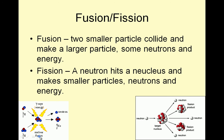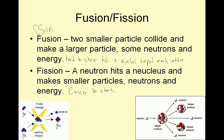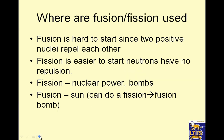Fusion: two smaller particles collide and make a larger particle, producing neutrons and energy. Fission: a neutron hits a nucleus and makes smaller particles, neutrons, and energy. Fusion is hard to start because positive nuclei repel each other. The only place that really does fusion commonly is the sun. Fission is easier to start because neutrons have no repulsion — this is what we humans usually do. Fission is used in nuclear power and bombs. Fusion is in the sun and can also trigger a fission reaction.